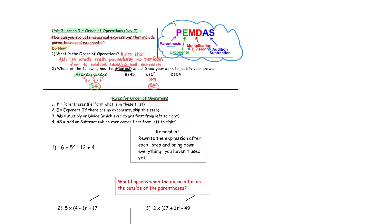Just to review, these are the rules of the Order of Operations: parentheses, exponents, multiply or divide — remember, it's whichever one comes first from left to right in the problem — and then lastly add or subtract, again first from left to right. Let's try number one as a warm-up. Remember, rewrite the expression after each step and bring down everything you haven't used yet. Pause the video, then check your answer. Your answer to number one is 23.